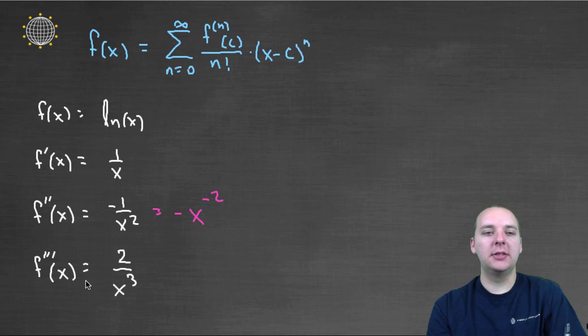So I'm kind of running out of space, I'm not going to write anymore. But the next one would have negative six x to the negative four, because we would write this as two x to the negative three. So you get negative six x to the negative four. So all that's good to know, but at the end of the day, that's actually not what I need.